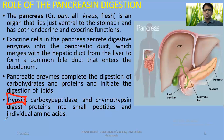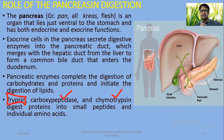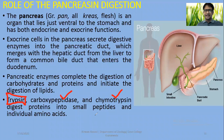Carboxypeptidases are also protein-digesting enzymes. Chymotrypsin is also secreted in inactive form as chymotrypsinogen. These are inactive enzymes called zymogens, and there are various mechanisms to activate them. Trypsin activates chymotrypsinogen into chymotrypsin. These enzymes digest proteins into small peptides and even individual amino acids.